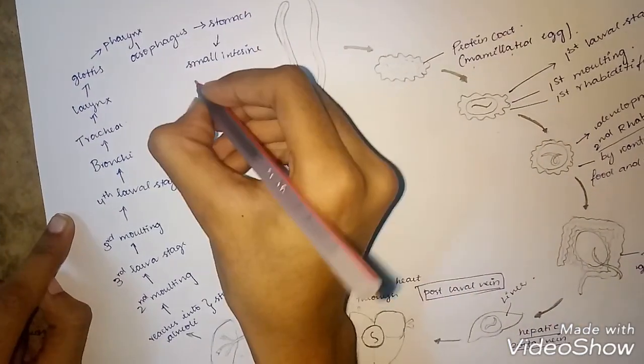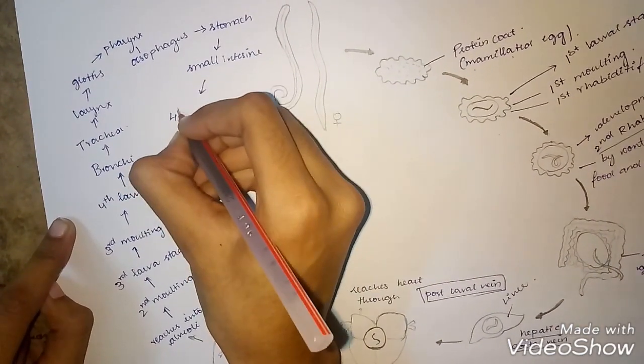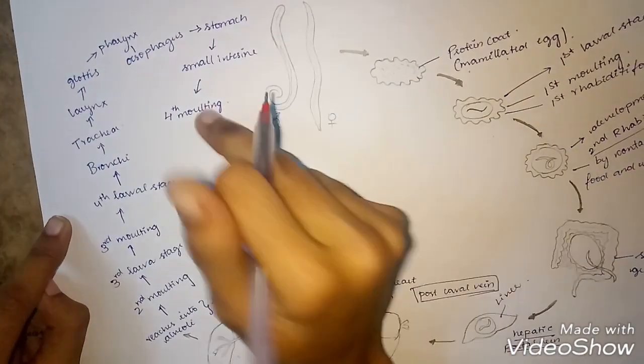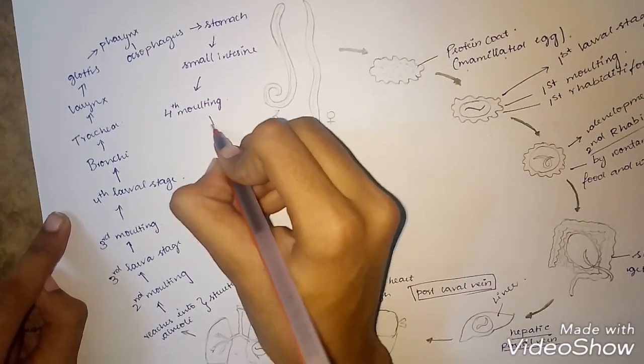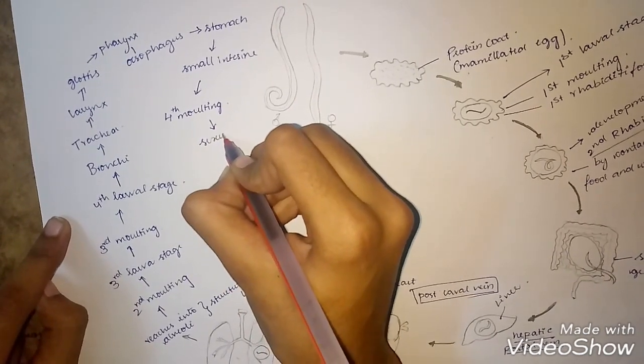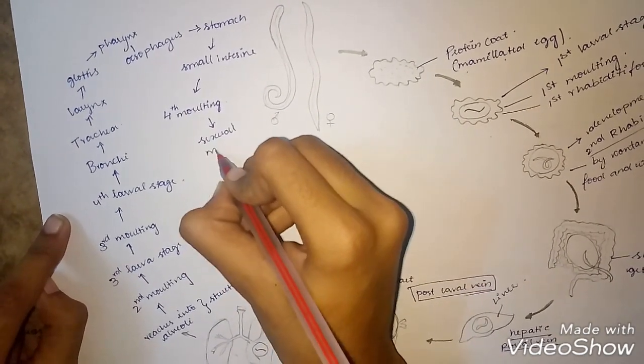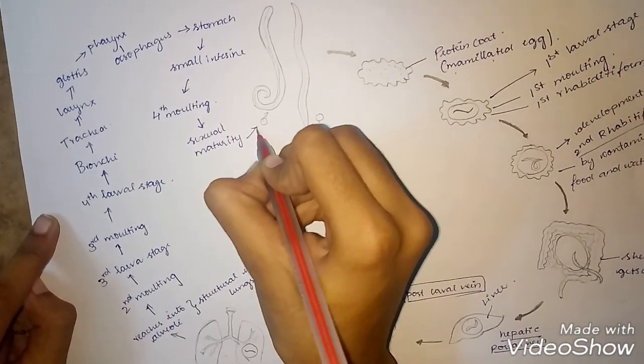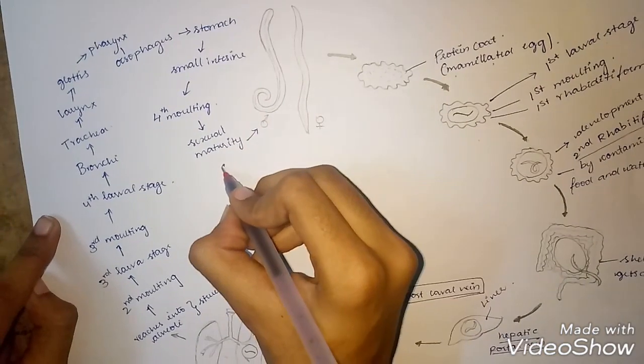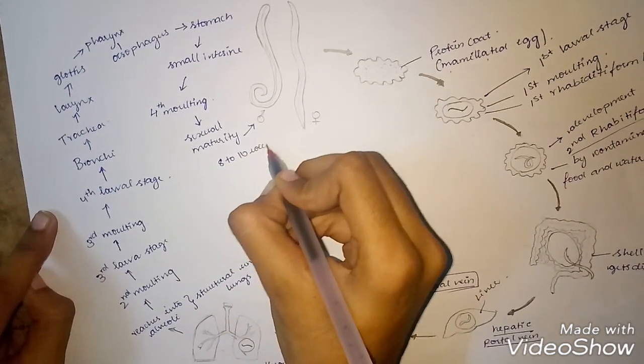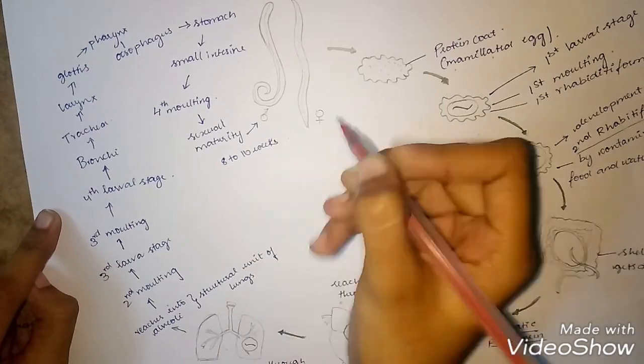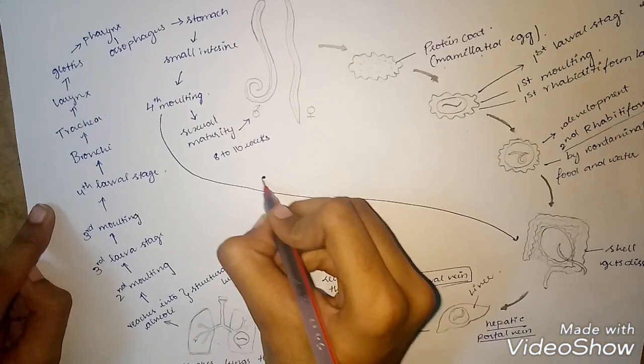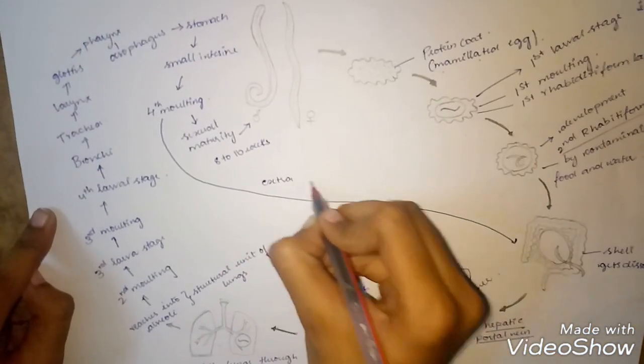In the small intestine, it undergoes fourth molting. During this molting, the Ascaris attains sexual maturity and becomes a young adult in 8 to 10 weeks. This entire process is known as extraintestinal migration.